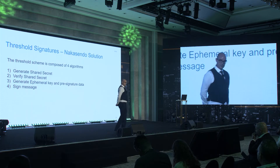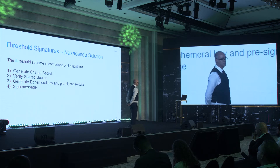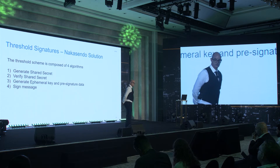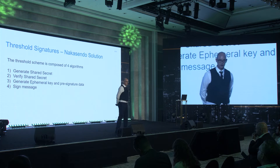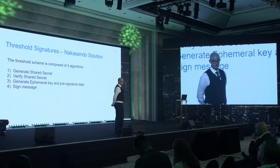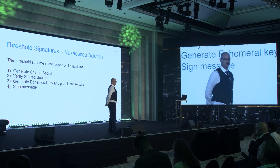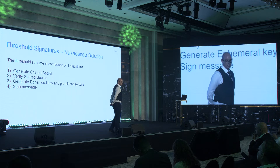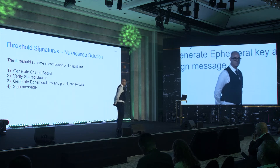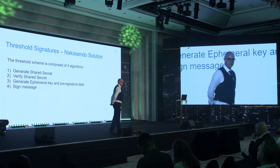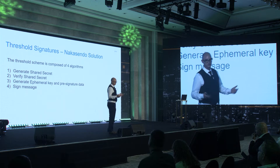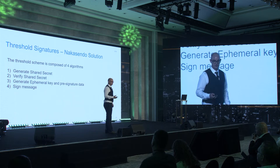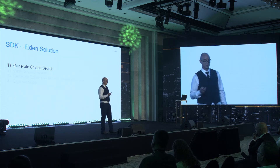Specifically in the Nakasando solution, I'd like to walk you through the algorithm as quickly as I can. This is a demonstration only — I only have two players on the screen, but you can't do it with two people. You need a minimum of three people to implement the threshold scheme. But as you'll see in a minute, there are a lot of arrows, so the more people you put in, the more complicated the diagram looks.